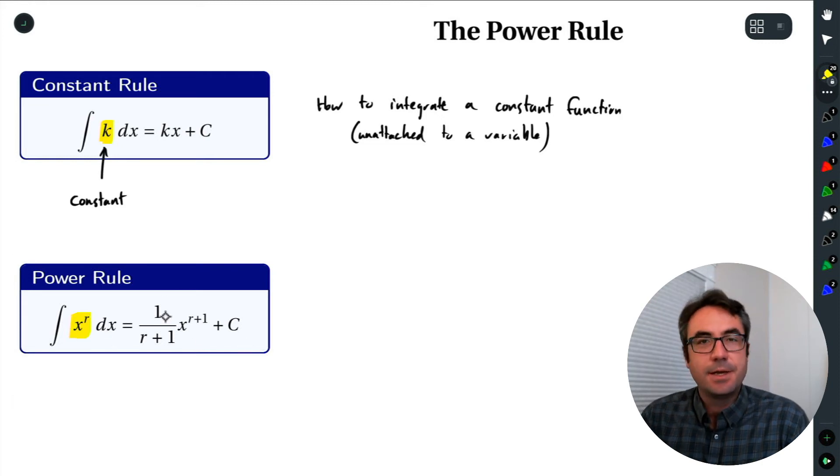Well, there's a formula here. It's 1 over r plus 1 times x raised to the r plus 1 and plus c. Now you can remember this formula, but I feel that it's a little bit easier to think of this almost as a process, kind of a step-by-step process. So if we want to integrate x raised to the r, what do we do?